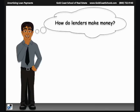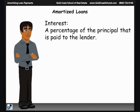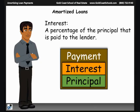So how do lenders make money? Very simply, lenders charge the borrower for the use of their money. This is called interest. The interest paid is an agreed-upon percentage of the loan balance. Interest is paid over the life of the loan as a part of every loan payment.